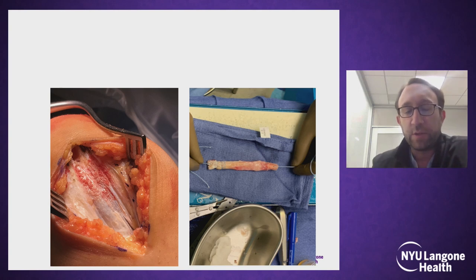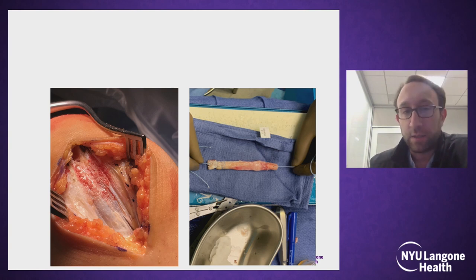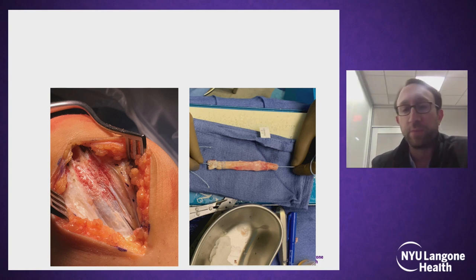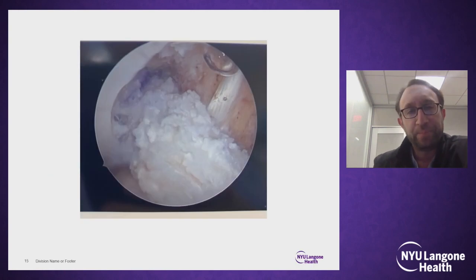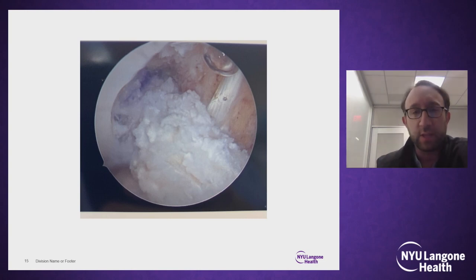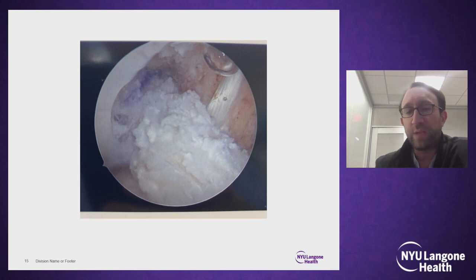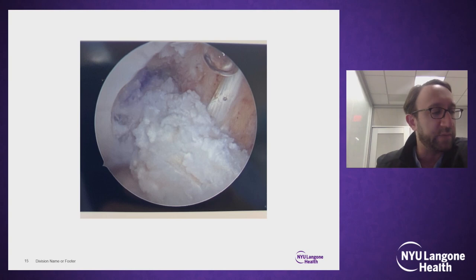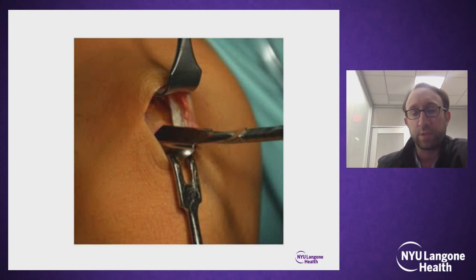These pictures show that you can get a very robust graft with a reasonable incision. You do not need to close the defect in the quadriceps after harvest — some people do, some don't, but there are no clinical differences. Intra-articularly, it doesn't have the same striation as BTB, but you can see a very thick, robust graft with certainly a lot of collagen inside the knee to give adequate strength to the ACL reconstruction.